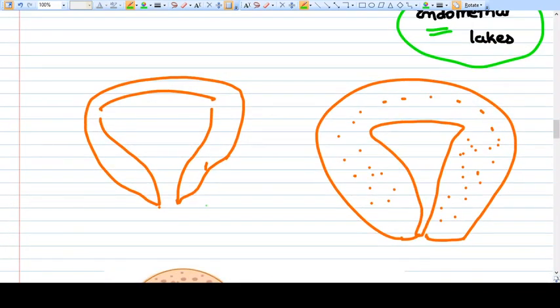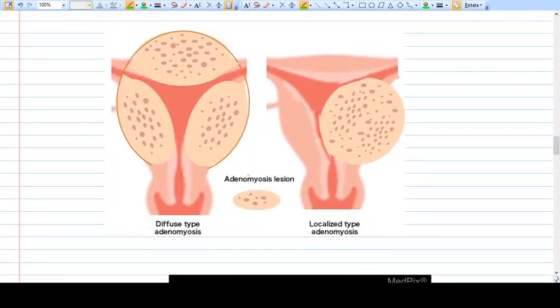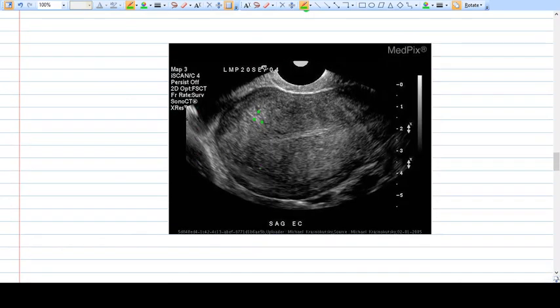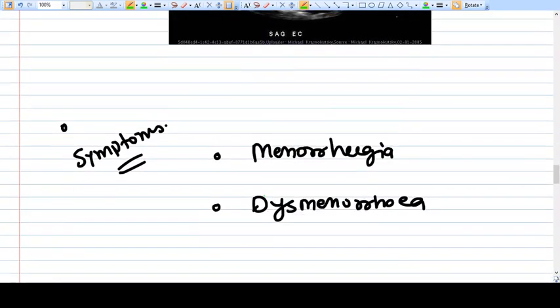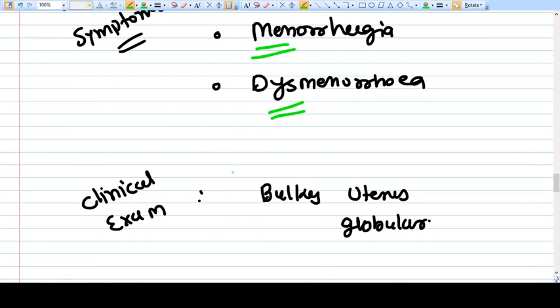Basically, adenomyosis is a fatty uterus. This is the normal uterus and this is the adenomyotic uterus—you can generally identify the difference. Adenomyotic lesion can be localized like this in the lateral wall, or it can be diffuse. On ultrasound you see salt and pepper appearance. The symptoms are menorrhagia and dysmenorrhea in multiparous women above 40.